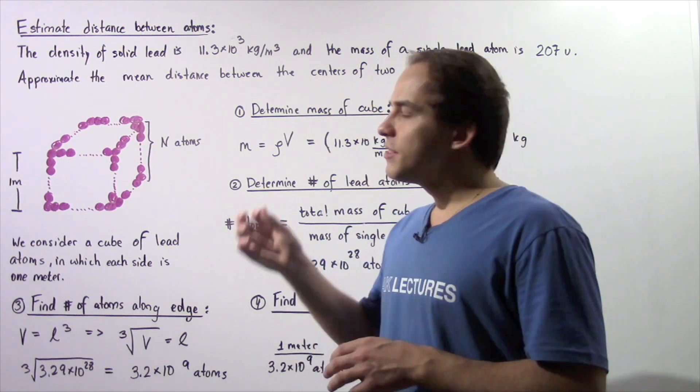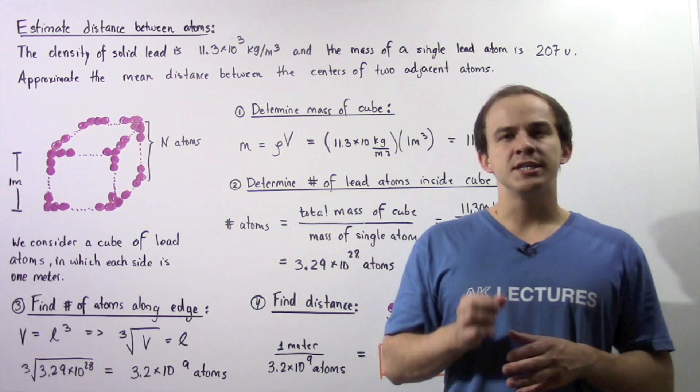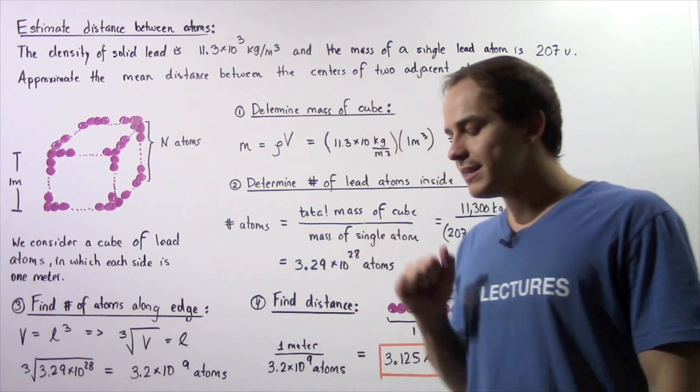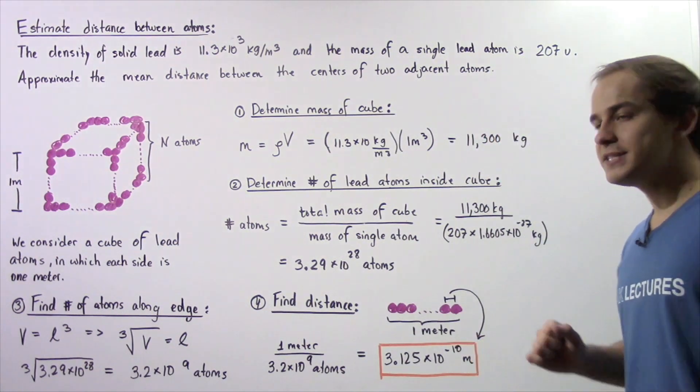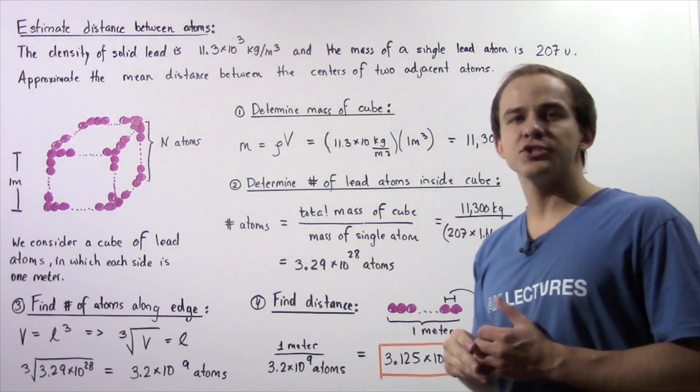So let's begin. The density of solid lead is 11.3 times 10 to the 3 kilograms per meter cubed, and the mass of a single lead atom is given to be 207 unified atomic mass units.